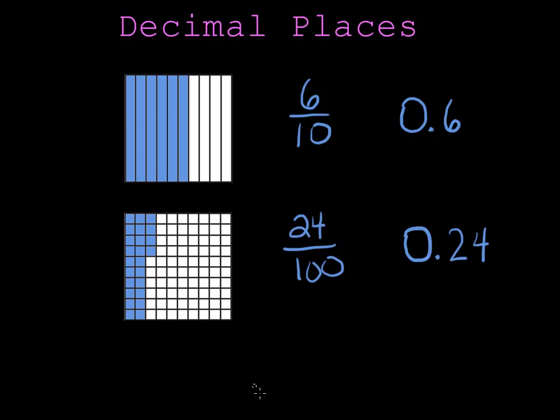So you can also take the hundredths and divide them up even smaller. If we were to divide each of these hundredths into ten little pieces then we would have thousandths. And if we were to divide each of those thousandths into ten little pieces we could have ten thousandths. So the pieces can get smaller and smaller and smaller.